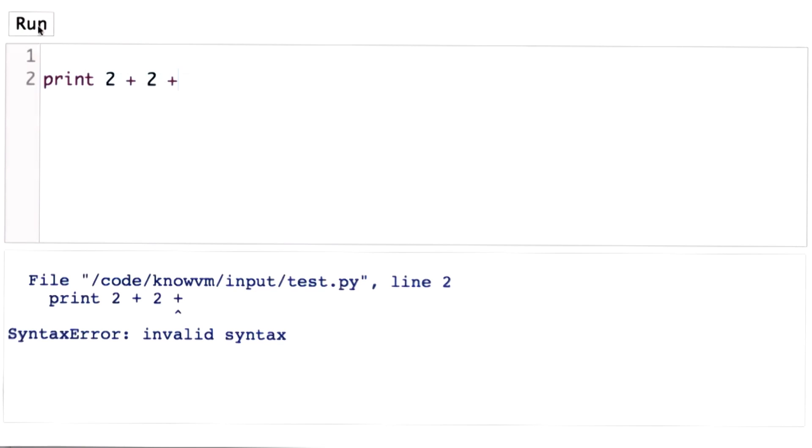The reason we get an error is that this is not actually part of the Python language. The Python interpreter only knows how to evaluate code that's part of the Python language. If you try to evaluate something that's not part of the Python language, it will give you an error.